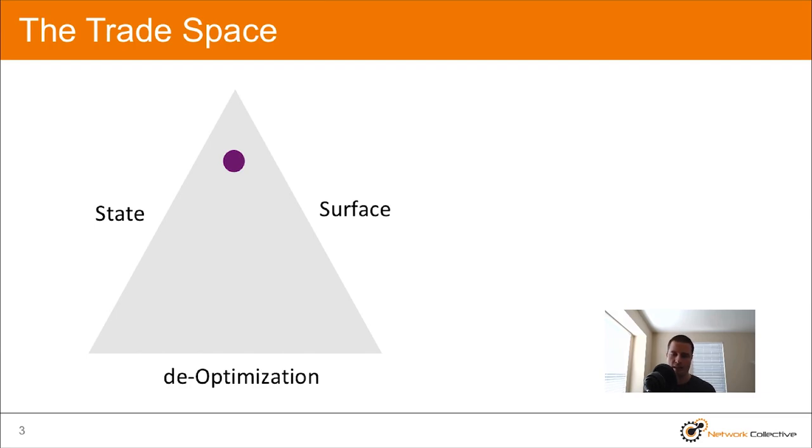This purple dot is at the top of the triangle, it is close to the line that says state, and it's close to the line or the edge of the triangle that says surface. So a technology or design or whatever entity fits in this purple area, would have low state and low surface interactions, and a high amount of deoptimization, aka it is not optimized at all.